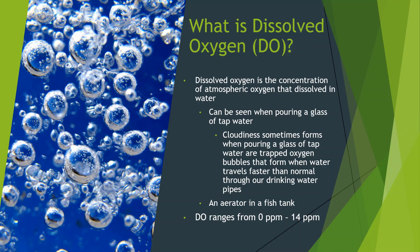Dissolved oxygen is the concentration of atmospheric oxygen that's dissolved in water. You can see a related concept when you pour a glass of tap water — the cloudiness is actually very tiny air bubbles that form because the water was moving fast and was probably a bit warm in those pipes. When you set that glass down, within 10 to 20 seconds the cloudiness disappears.